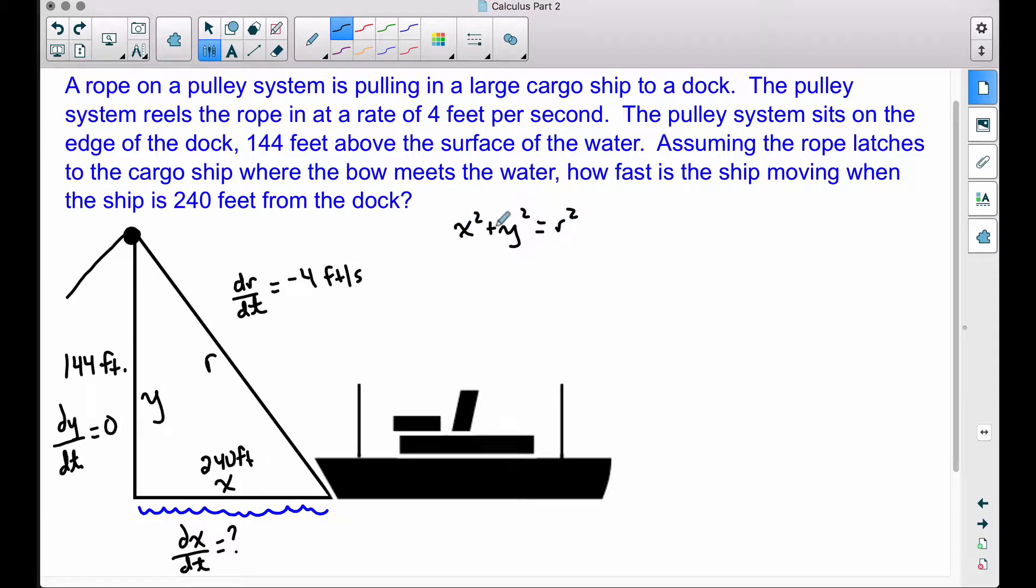The derivative of all of these terms with respect to time: X squared, its derivative is going to be 2X, don't forget your dX/dt, plus Y squared, its derivative is 2Y dY/dt. And the same thing goes for R, 2R dR/dt. Don't forget to tack on your dt pieces each time because all of these variables are changing with respect to time.